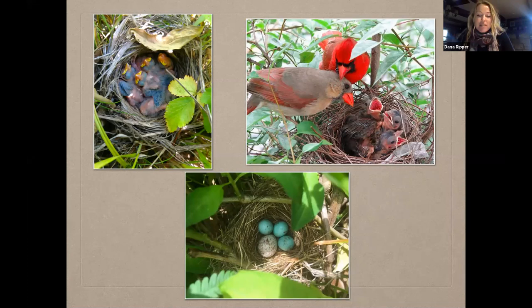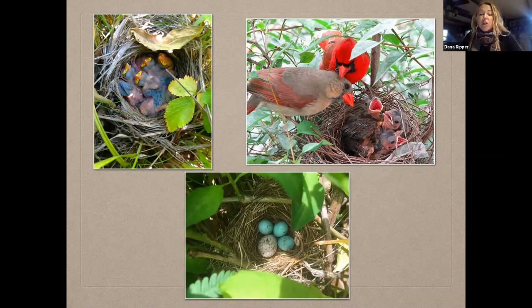The cowbird baby that hatches is larger than the chipping sparrow babies and competes very well. This summer, if you happen to see a cardinal or small sparrow feeding a baby that doesn't look like them and is typically larger, that's almost certainly a brown-headed cowbird. This happens to indigo buntings as well.